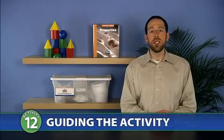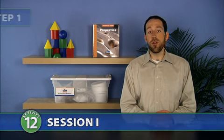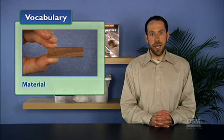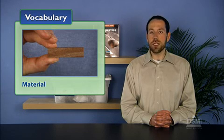To begin Session 1, distribute a sorting tray containing metal, plastic, and wood samples to each team. Give students a few moments to examine the contents of their trays. Then, define the word material for the class as the kind of matter an object is made of.